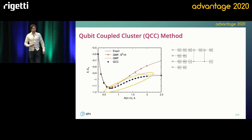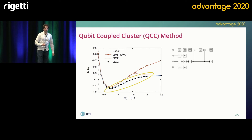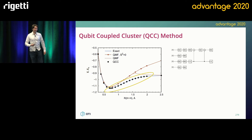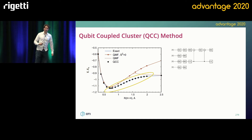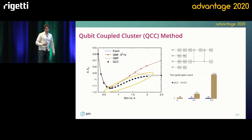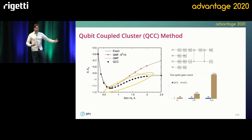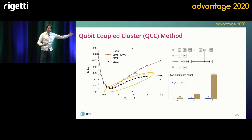This is the circuit diagram that it produces. On Rigetti's tutorial website, they use three CNOT gates to simulate H2, but with our method you actually only require two. One of the main benefits is that compared to unitary coupled cluster, the number of CNOT gates scales a lot better.